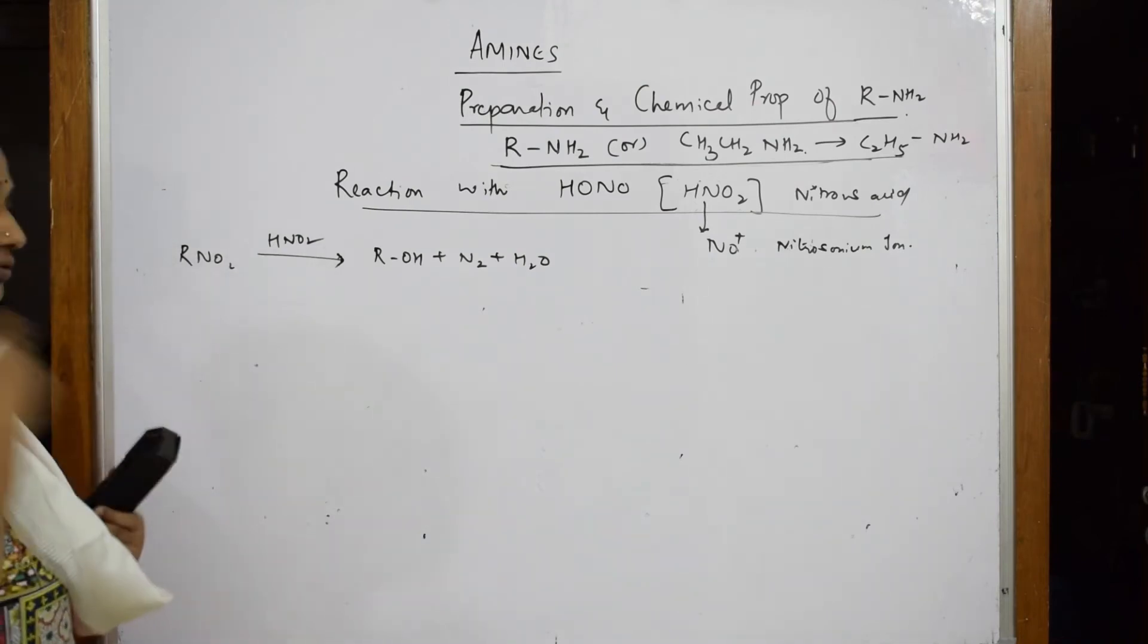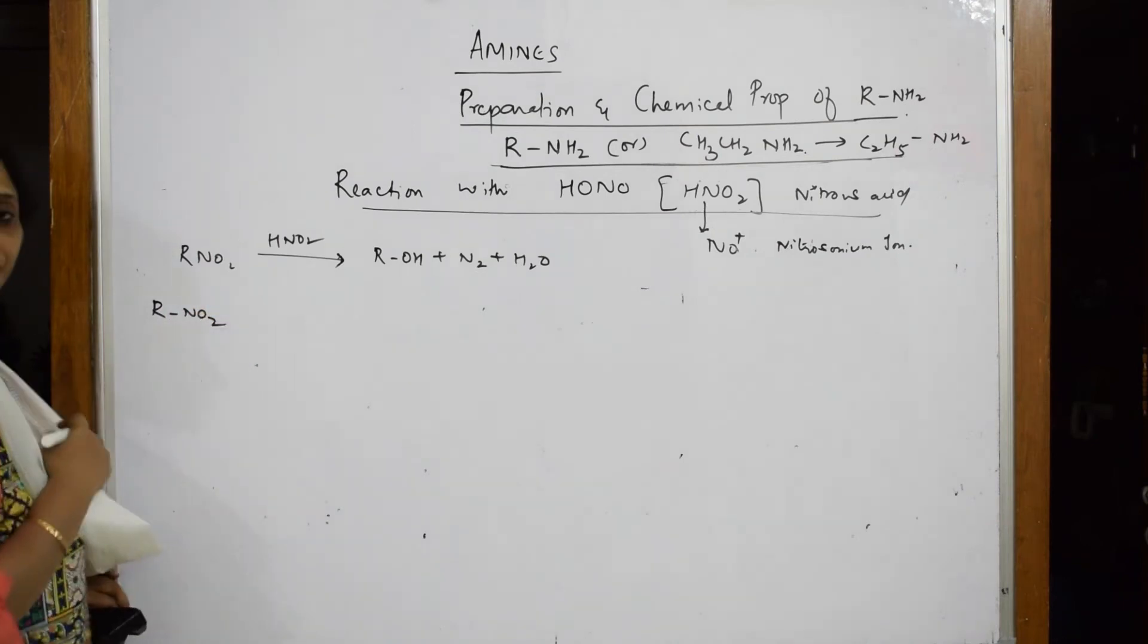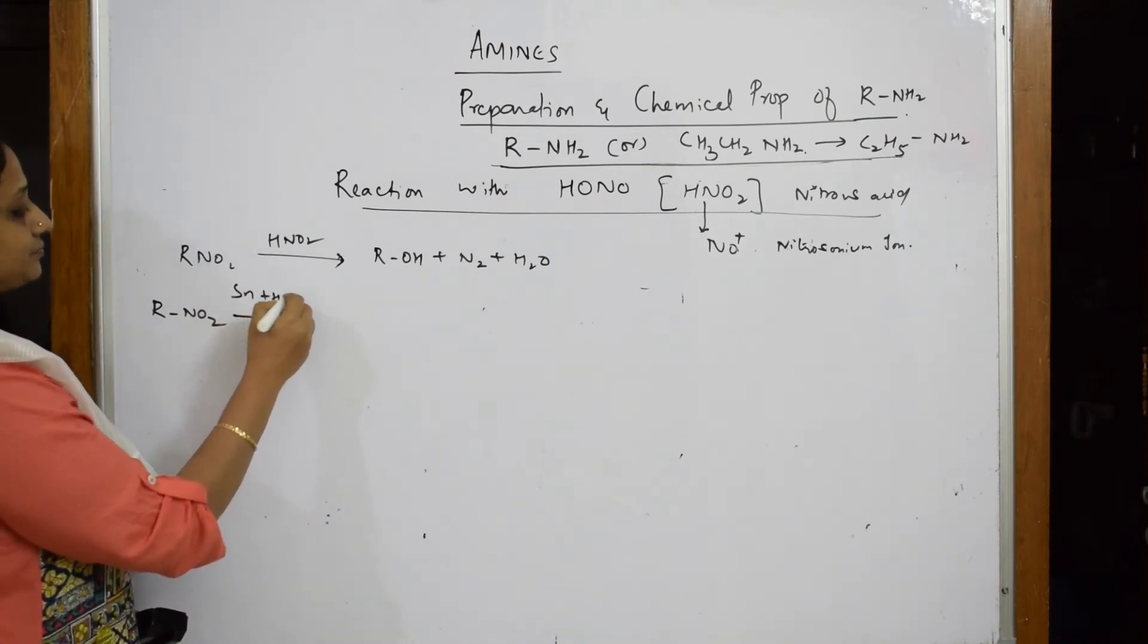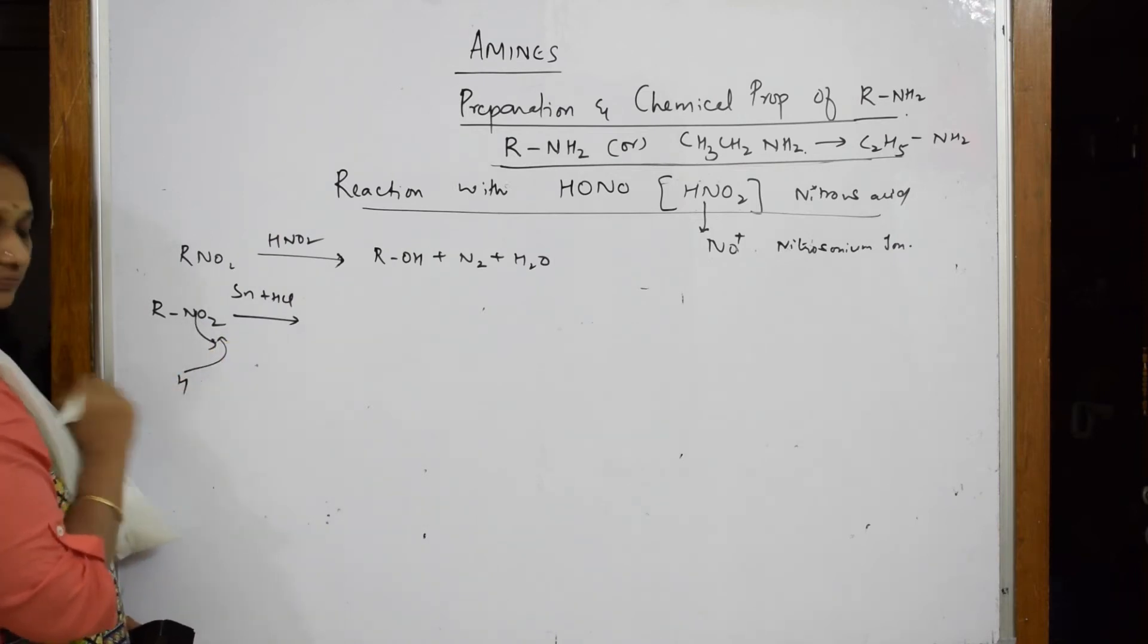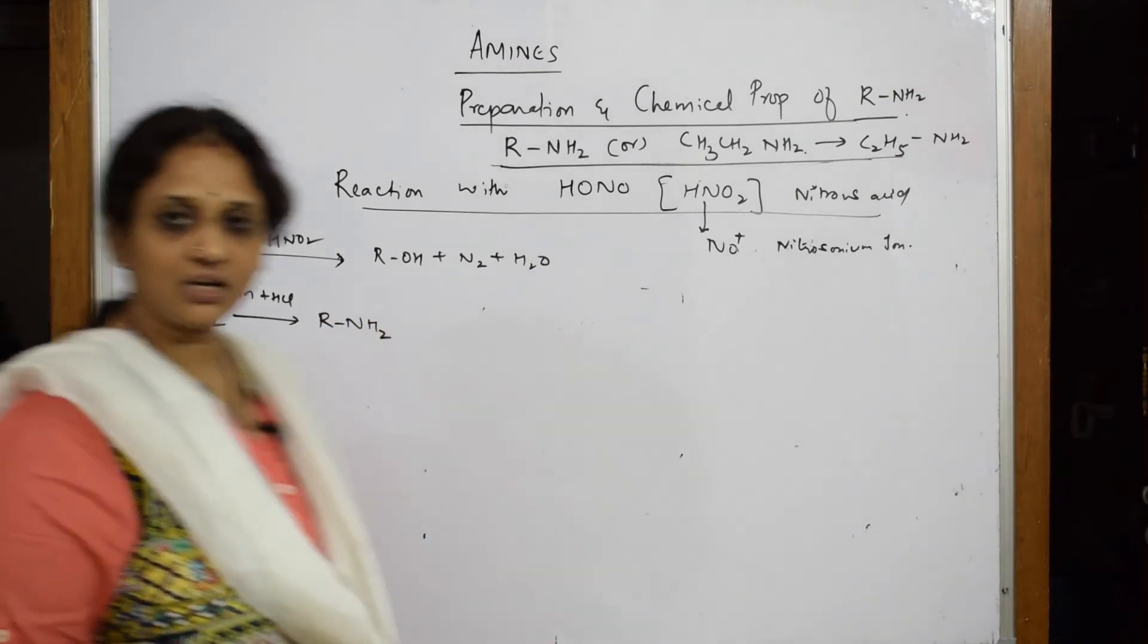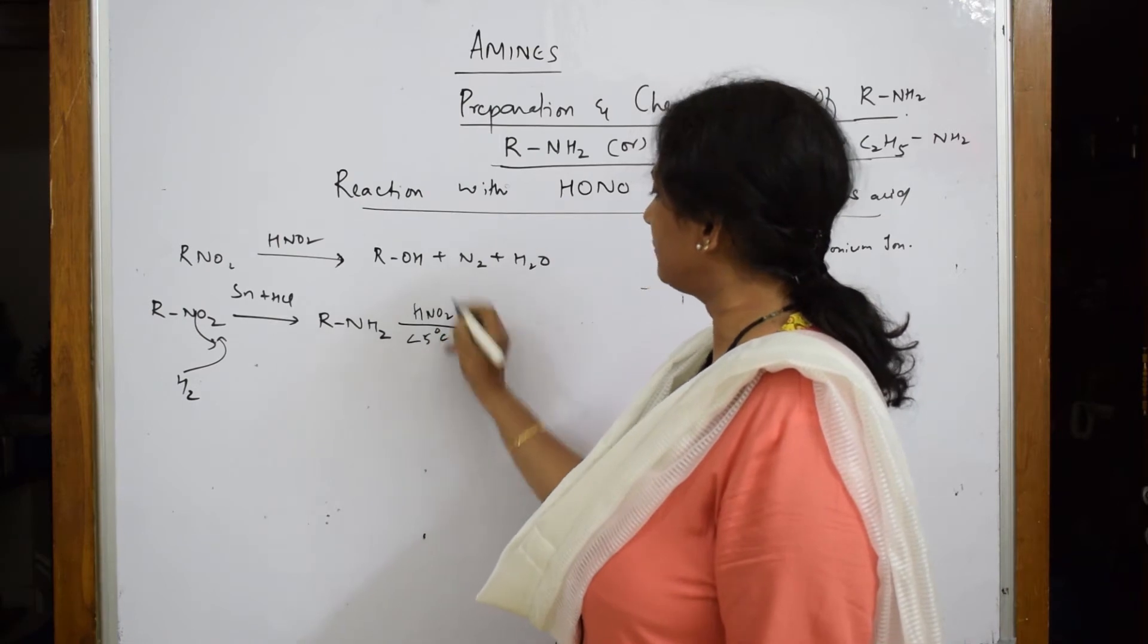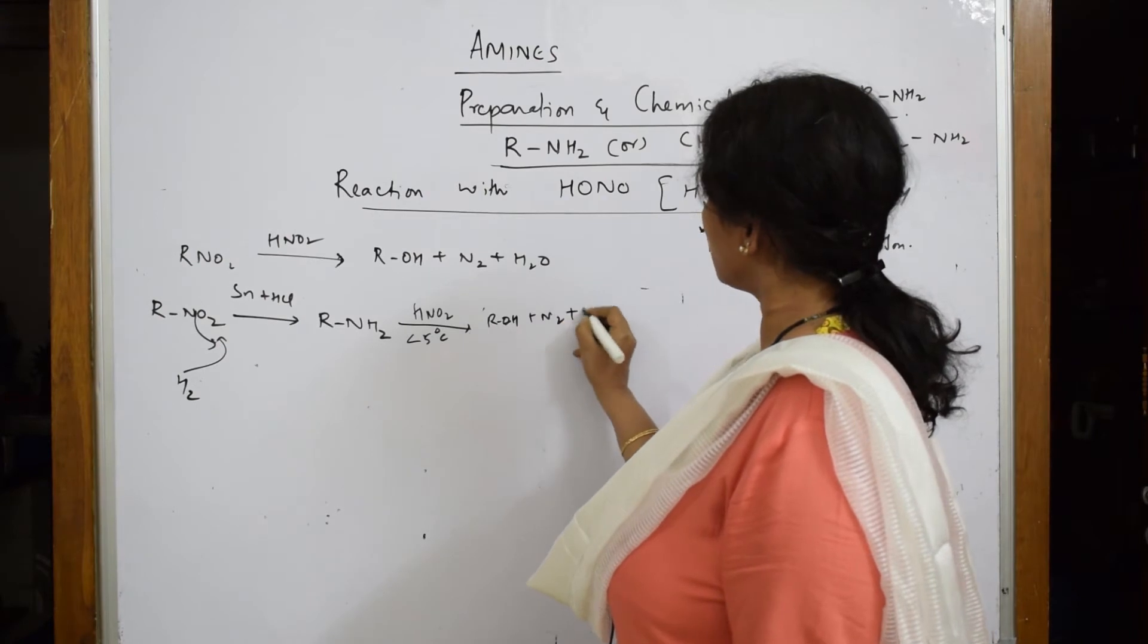Directly this will not get converted to your alcohol. We will see the reaction. First, RNO2 - as I said, nitro groups are first converted to your amino groups. For that, you reduce with metal and acid. Oxygen is lost and hydrogen is added. So what do I get? R-NH2. Now simple. This R-NH2, when I'm introducing nitrous acid at less than 5 degrees, I'm going to get an alcohol plus nitrogen plus water. This is your concept. Now let's see the mechanism.